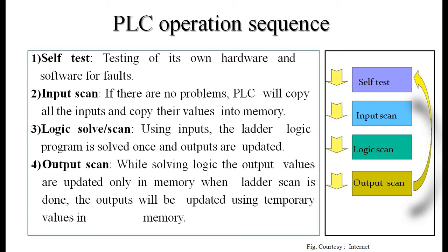This cycle continues to work. Once the output scan is complete, it will send highs or lows to the respective output devices, and then it will start for input scan again. Likewise, it will continuously update the inputs, solve the logic, and update the outputs. This is called the update-solve-ladder-update cycle. Continuously this cycle will run, and there will be changes in the output according to changes in the input sensors. This is the operational sequence for a PLC.